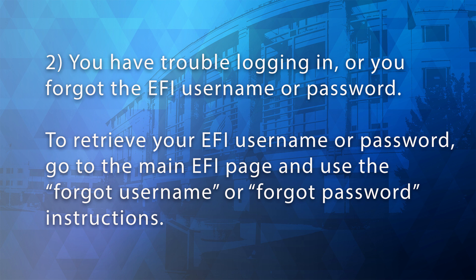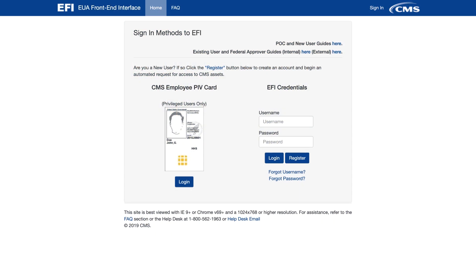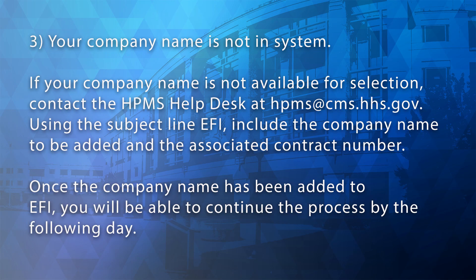2. You have trouble logging in or you forgot the EFI username or password. To retrieve your EFI username or password, go to the main EFI page and use the Forgot Username or Forgot Password instructions. 3. Your company name is not in the system. If your company name is not available for selection, contact the HPMS Help Desk at HPMS@cms.hhs.gov with the subject line EFI and request the company name to be added and provide the associated contract number.